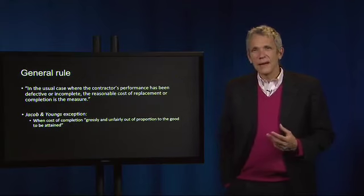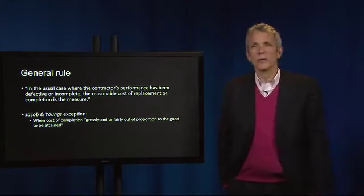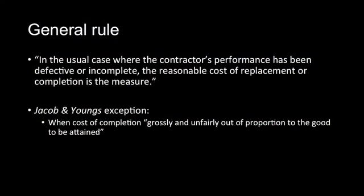Justice Hancock's reasoning takes cost of completion as the default rule. In the usual case, where the contractor's performance has been defective or incomplete, the reasonable cost of replacement or completion is the measure. His task is to figure out whether precedents like Jacob and Young v. Kent require him to deviate from this general rule. Jacob and Young's, as a decision of the Court of Appeals of New York, was binding precedent. The rule there was that when the cost of completion was grossly and unfairly out of proportion to the good to be attained, the court would calculate damages based on diminution in value rather than cost of completion.